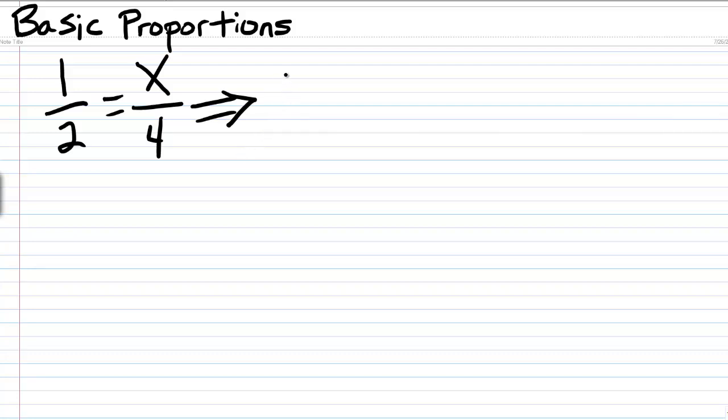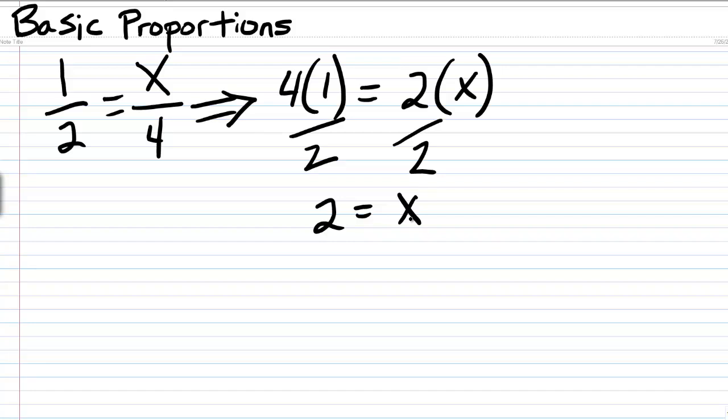On the left side, we have four times one equals two times X, right? Then we divide both sides by whatever the constant is over here where X is, so we're going to divide this side by two, and we divide this side, which is four, by two. And the answer, no surprise, turns out to be X equals two. So that's proportion.